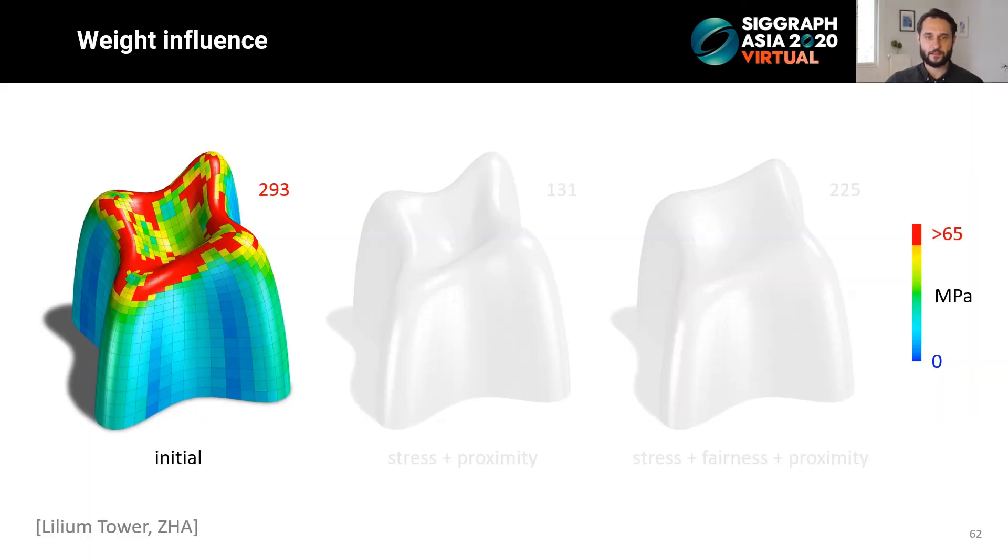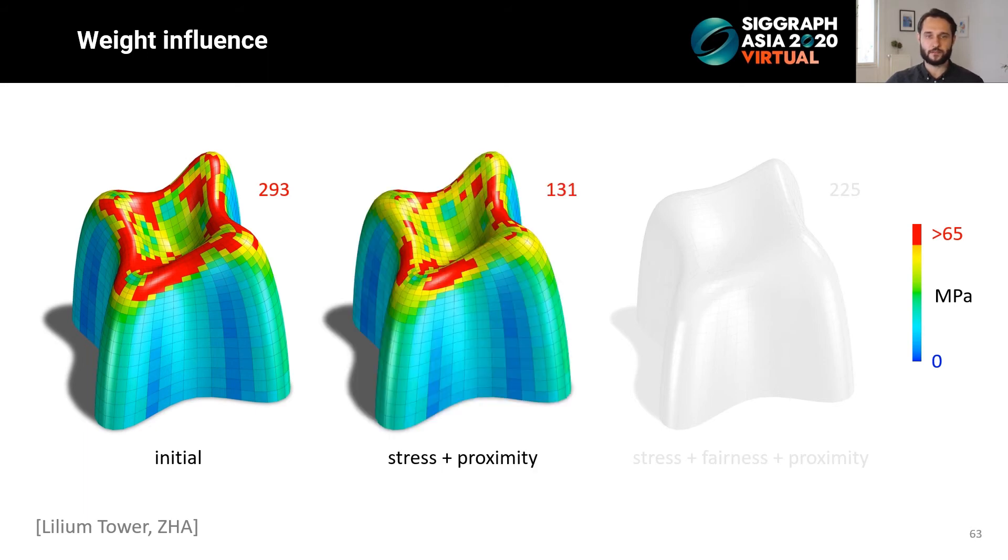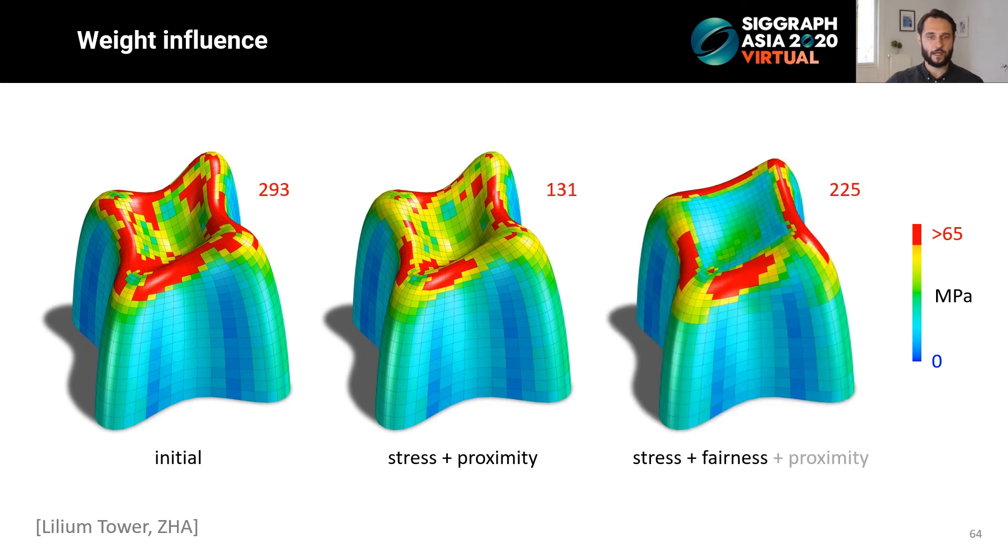Let us briefly see how the final result is influenced by the weight choice. We use an initial panelization of the Lilium Tower by Zaha Hadid Architects for this example. Optimizing this design for only stress and proximity leads to a considerable reduction in the number of breaking panels, but to an unsmooth and unaesthetic mesh. Alternatively, optimizing for stress and fairness, while lowering the proximity importance, leads to a much smoother design that deviates from the original input.